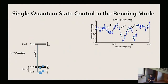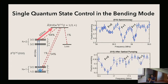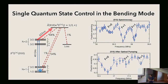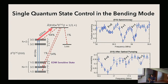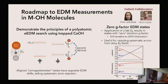We also want to regain single quantum state control on CaOH. We can do this with a combination of optical pumping pulses and microwave pulses to populate most of the population into a single quantum state, and then drive coherent Rabi oscillations of that state. There is also an EDM-sensitive state here which could be used for future EDM measurements. CaOH on its own is not heavy enough to be really useful, but it has the same generic features that a heavier polyatomic molecule would have.